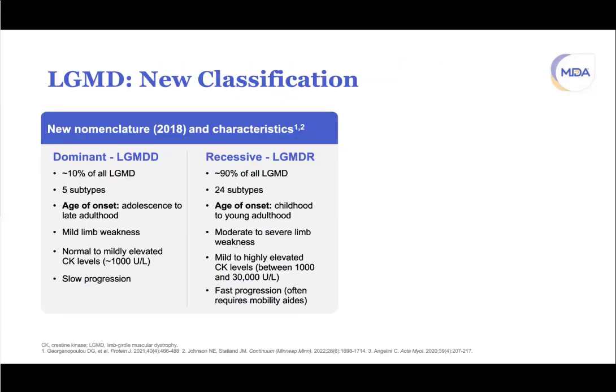The new nomenclature separates LGMD into dominant versus recessive. Recessive is far more common, accounting for about 90% of all cases, with 24 subtypes compared to only five dominant subtypes. Recessive onset is typically earlier — childhood to young adulthood — whereas dominant tends to be later, mostly adolescent to late adulthood. Severity is moderate to severe for recessive and mild to moderate for dominant.